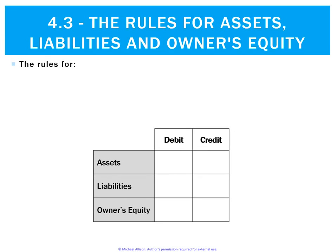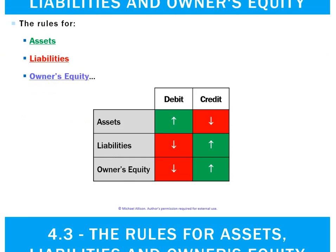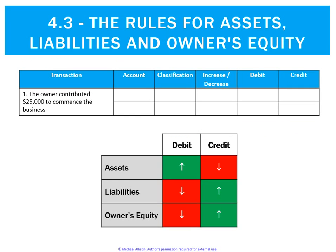For assets, they go up on the debit side and decrease on the credit side. Liabilities have the opposite effect — they go up on the credit side and decrease on the debit side, and so does owners equity. This mirrors the accounting equation: assets equals liabilities plus owners equity. It makes sense that the rules for assets are completely opposite to those for liabilities and owners equity.